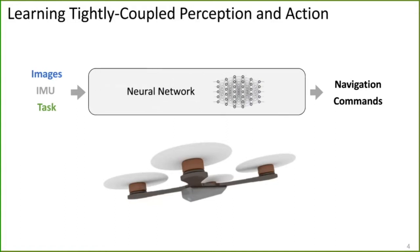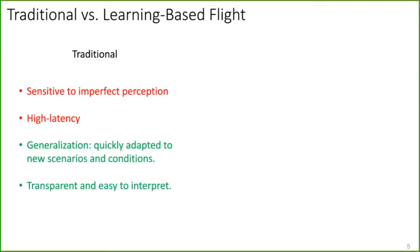Therefore, what I've proposed was to learn tightly coupled perception and action policy through a neural network, which takes as input on-board sensor observations, like images and inertial measurements, and a form of the task, like a GPS coordinate or an image to achieve, and directly transforms them into navigation commands. However, this approach might have high latency and be sensitive to imperfect perception with compounded errors.